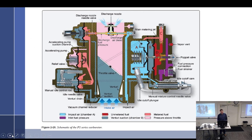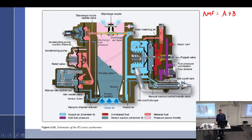Talking about this again — it's a little different because C doesn't have an effect here. So air metering force is A plus B, same as before. Chamber A is impact air, which tends to open the poppet. B is suction, which also tends to open the poppet.